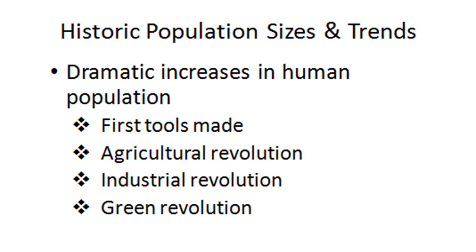There are four major periods in time — four major innovations — that allowed for dramatic increases in the human population. The industrial revolution saw an extremely large exponential growth. First, when tools were being made and fire was mastered, spears and arrows increased the food source and population. Then the agricultural revolution, when humans first started farming. The industrial revolution caused the huge increase largely due to improvements in medical technology and sanitation. Finally, the green revolution increased the amount of food that could be grown on a given area of land.